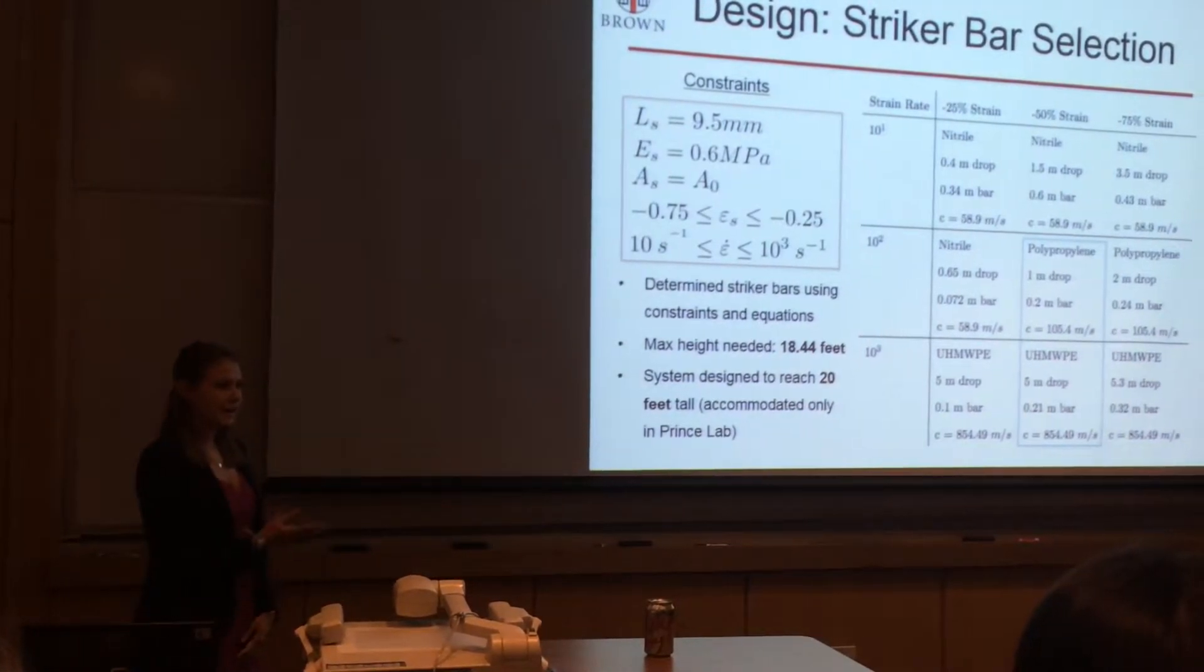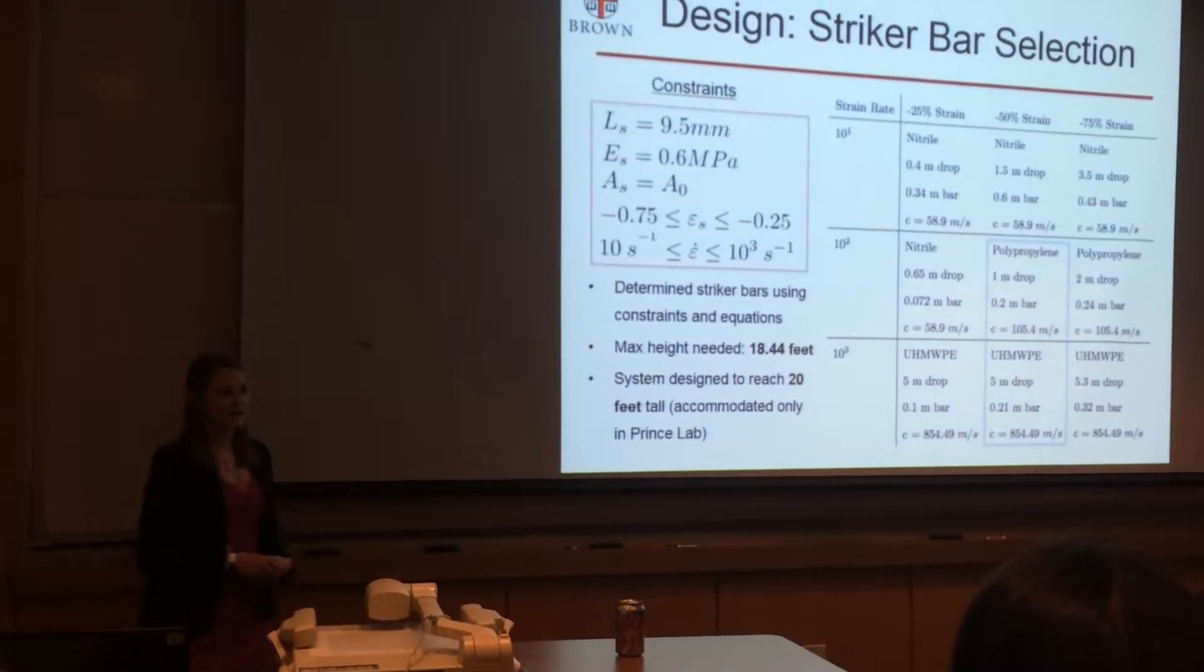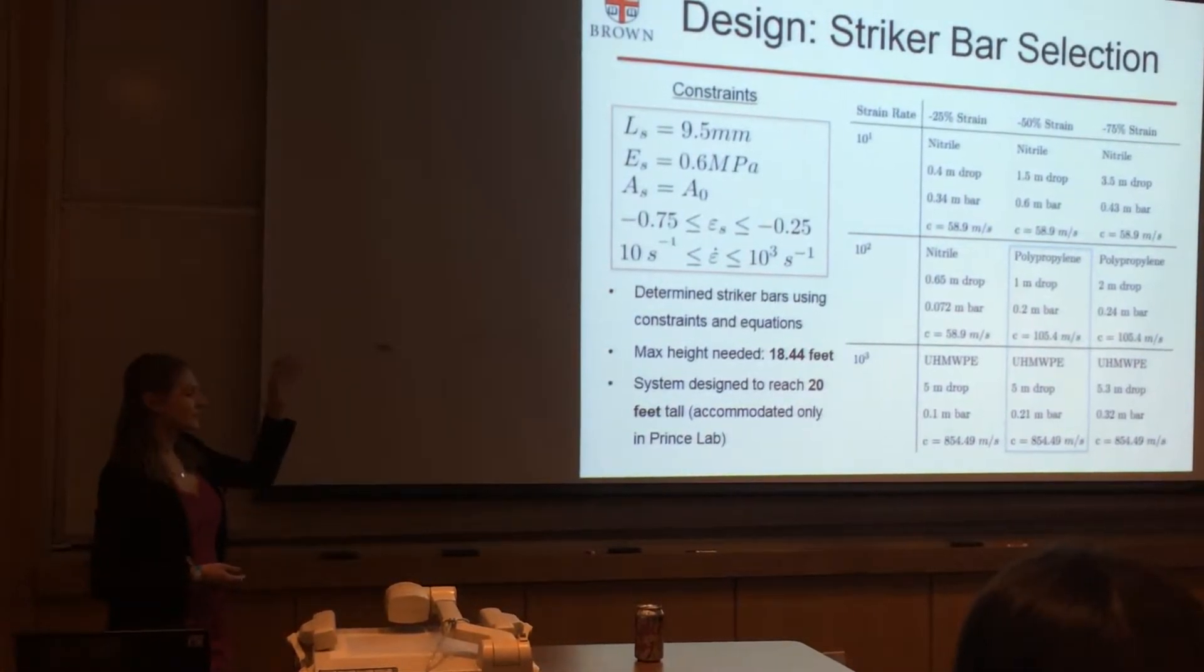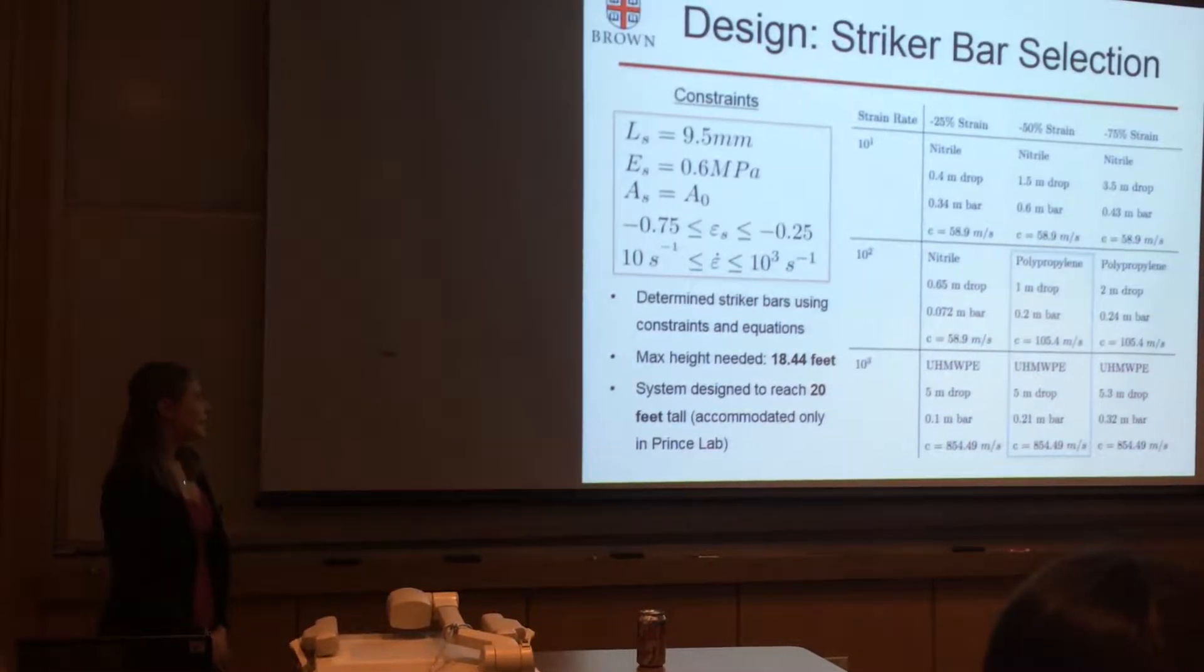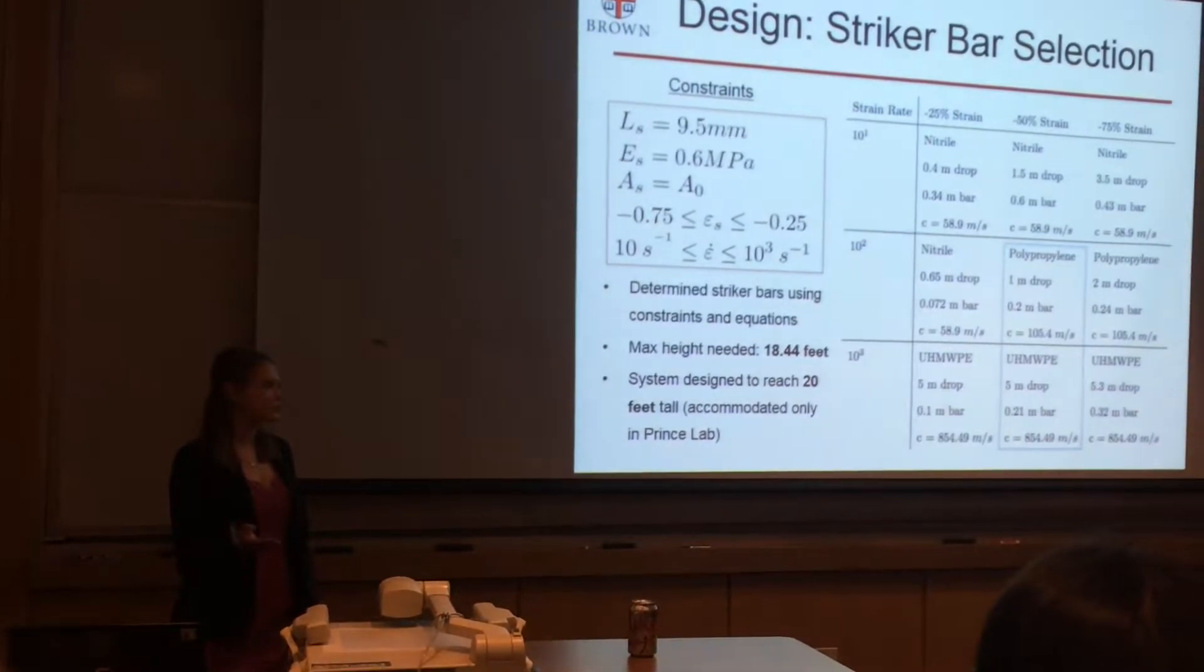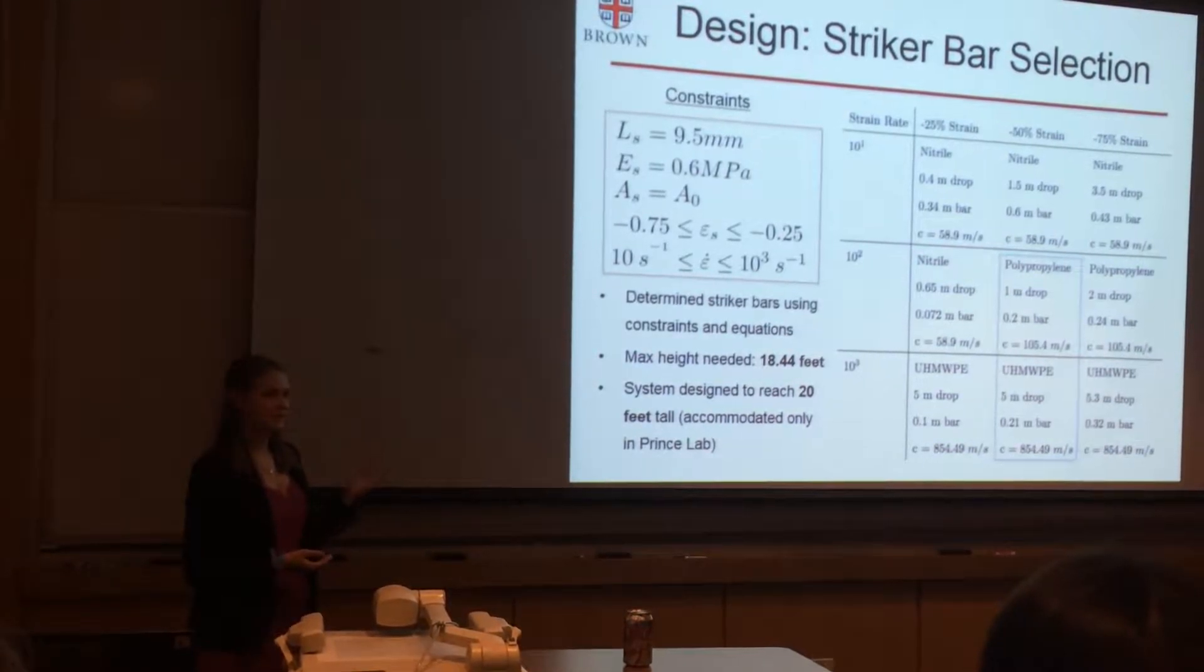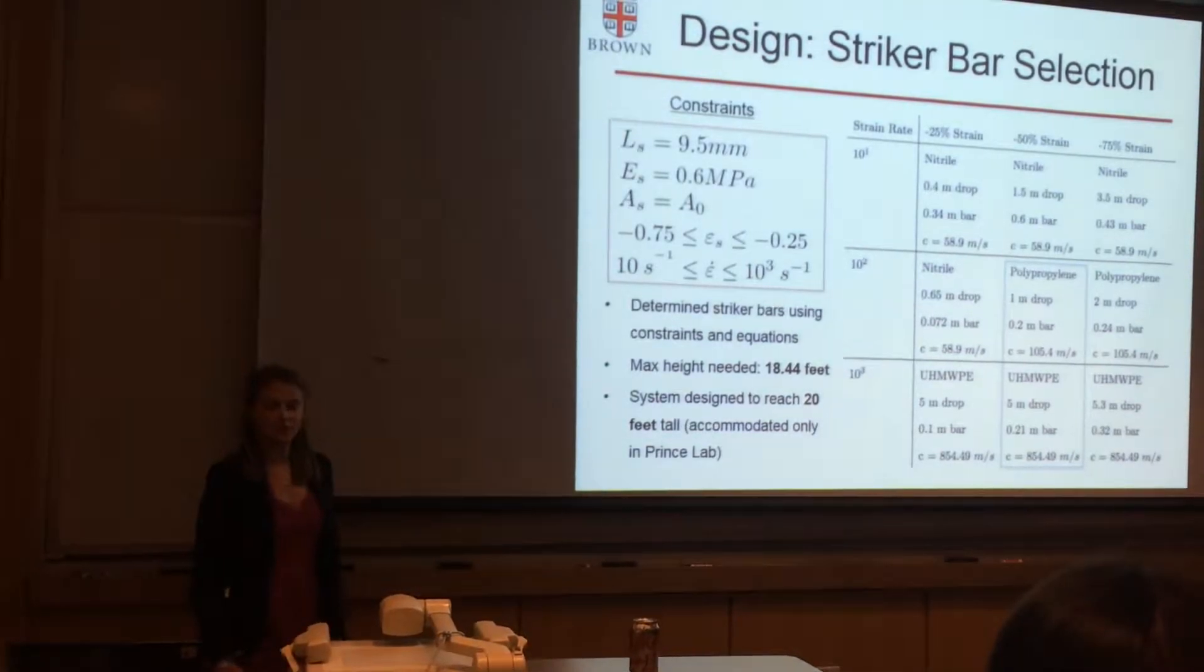The Frank lab has already studied a similar elastomeric foam so I used that as a guiding point for the system. We knew the length, the thickness of this foam and an approximate Young's modulus and also because the foam is available in sheets we simplified calculations by assuming that the area of the striker bar and the area of the sample were equal. The strain and strain rate ranges we desired to study were 25 to 75 percent nominal compressive strain for strain rates from 10 to the first to 10 to the third one over seconds.